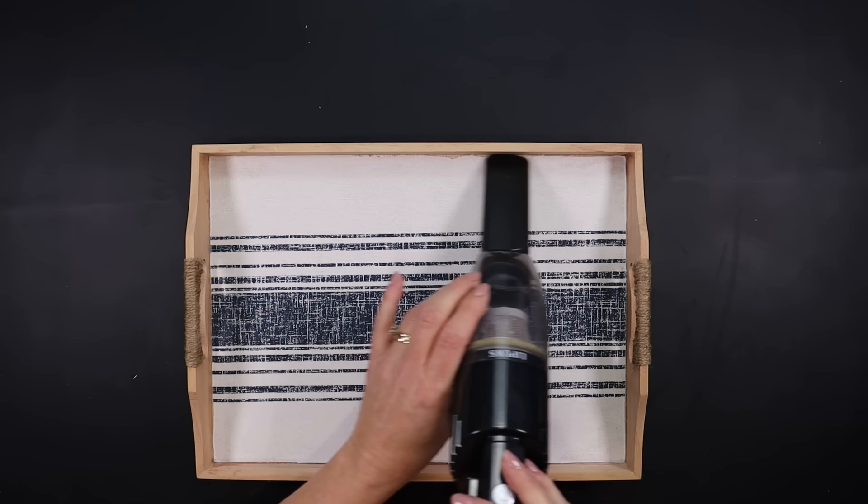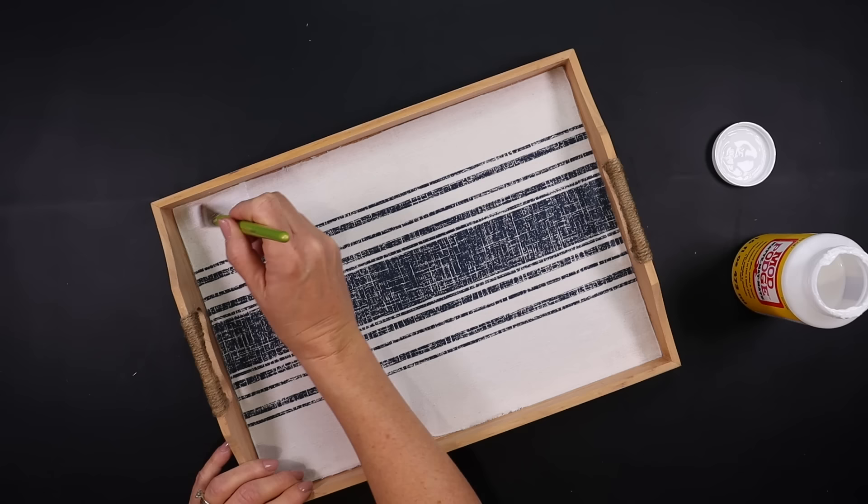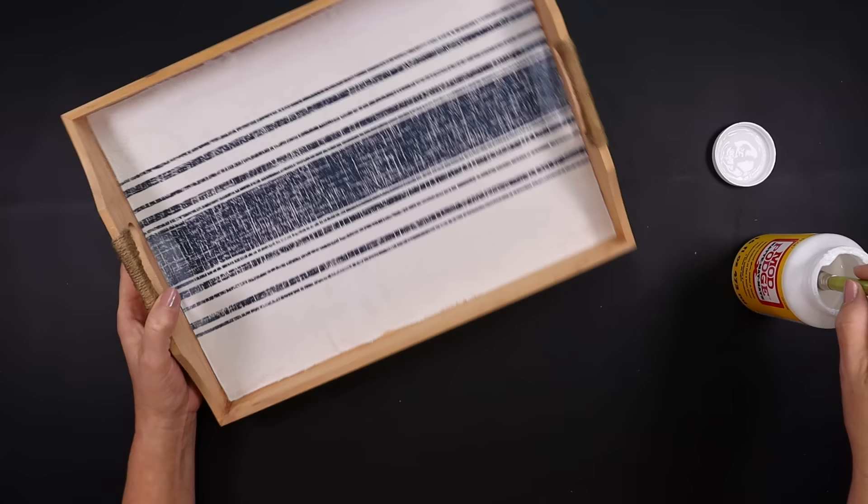I'm using my mini vacuum to remove any of the loose fibers before we seal this piece in. We'll be sealing it with a layer of Mod Podge over the entire top part of the placemat. This is going to allow me to easily wipe this off.